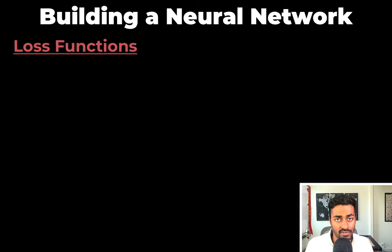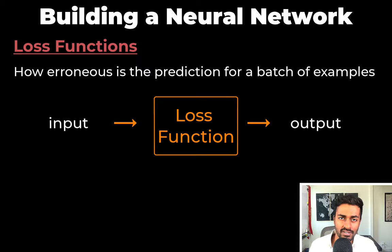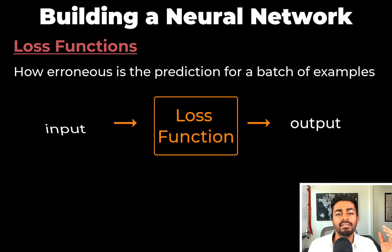Now onto the next concept, which is a loss function. The loss function is a function that quantifies how erroneous the prediction of a neural network is for a batch of examples. So the loss function is a function. That means it has inputs and an output.